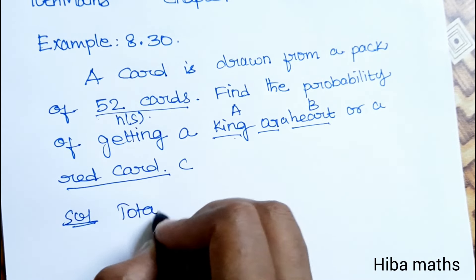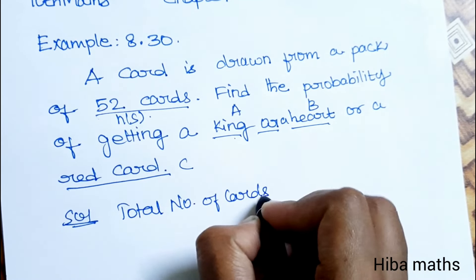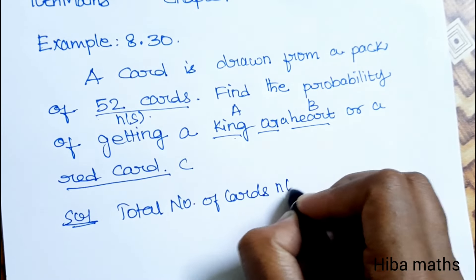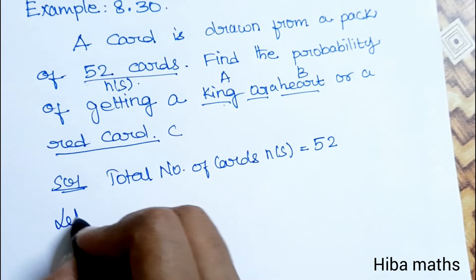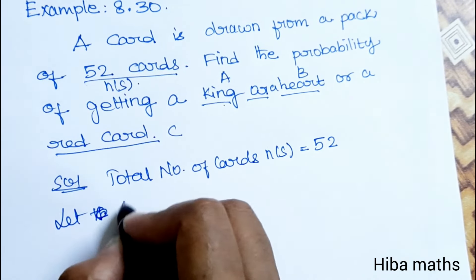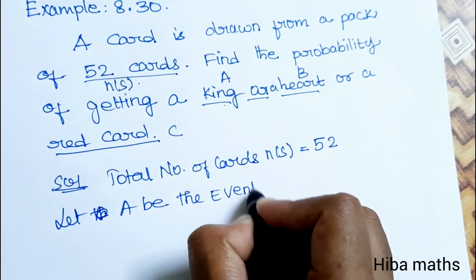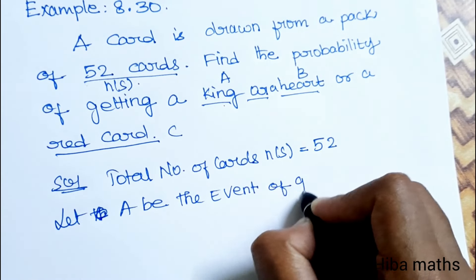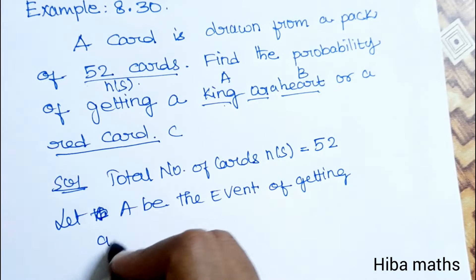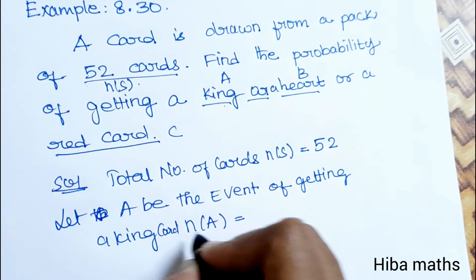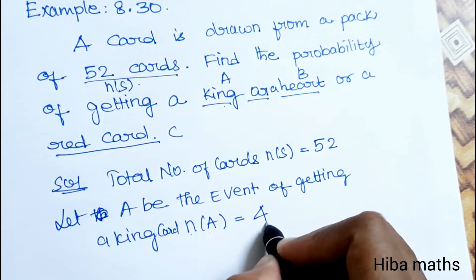Total number of cards, n(S), is 52. Let A be the event of getting a king card. There are 4 kings in a deck, so n(A) is 4.